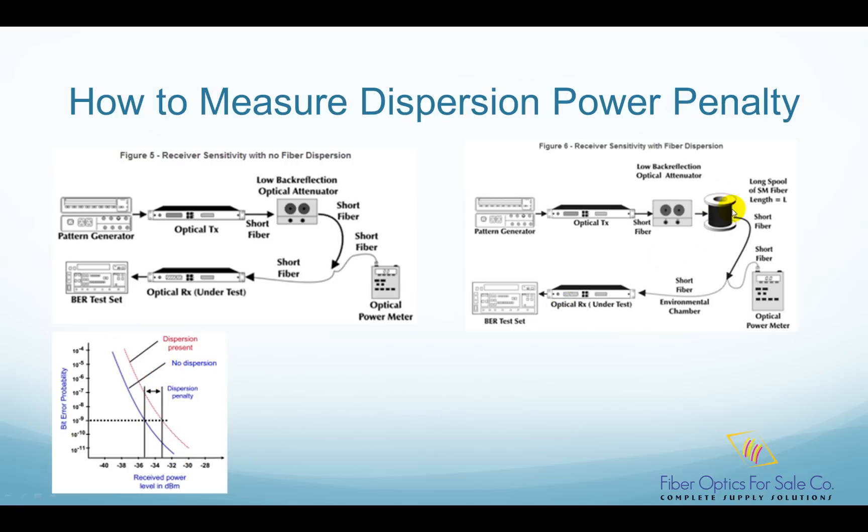Now, we insert the long-distance single-mode fiber under test into the link. Again, we adjust the attenuator to print out another bit error ratio versus received optical power curve. This curve is the red curve as we previously discussed. This red curve has fiber dispersion.